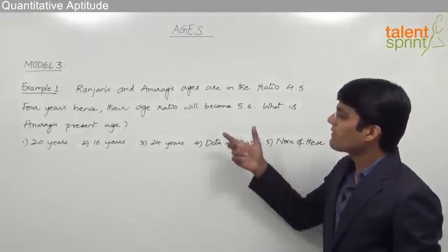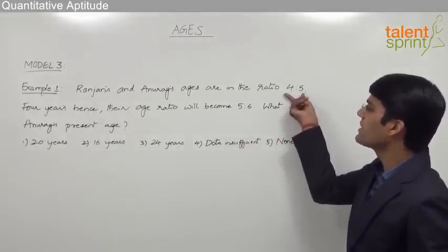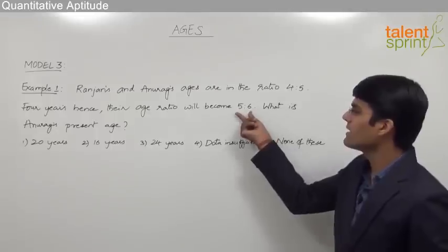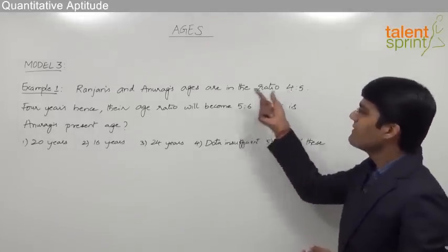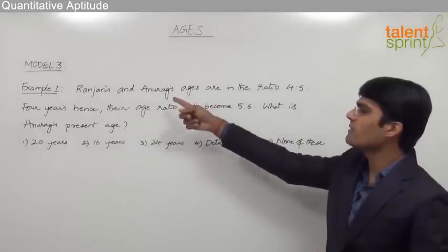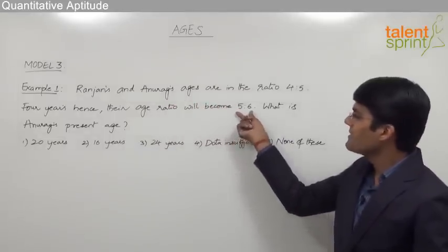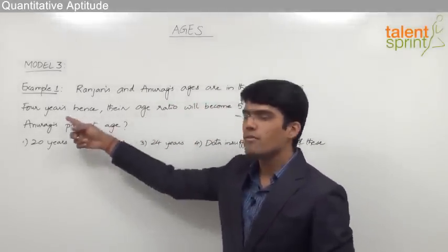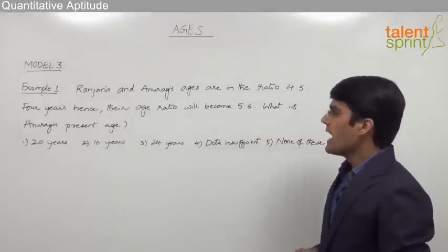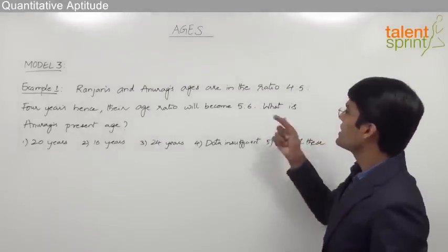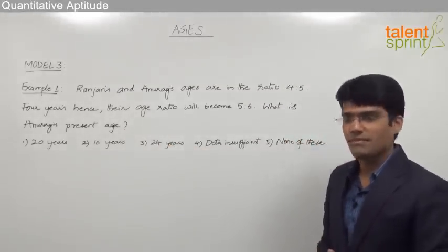As we can see here, we have got two ratios: one is 4 is to 5, and the other one is 5 is to 6. Four is to 5 is the ratio of their present ages, and 5 is to 6 is the ratio of their ages four years hence. From these two ratios we are supposed to find out Anurag's present age.